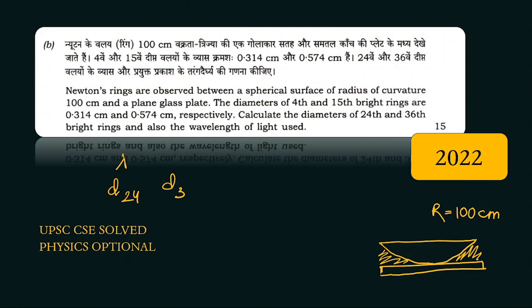We know the path difference between the two reflected rays is 2μt cos θ plus λ/2. Because we know θ is zero degree, we have normal incidence, so this cos θ goes to one. So our path difference between the two rays will be 2μt plus λ/2.